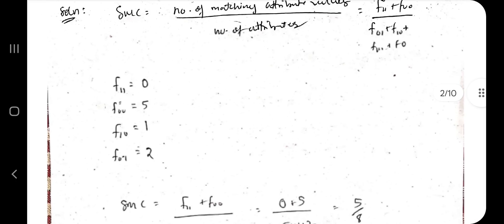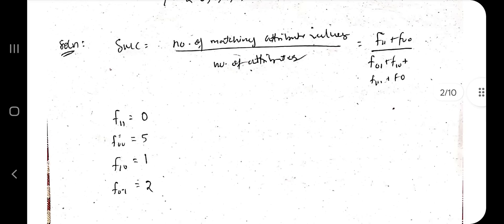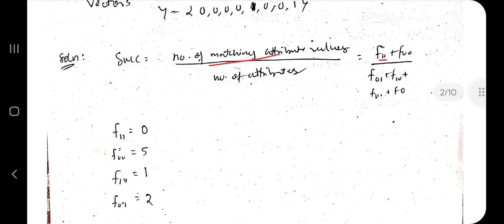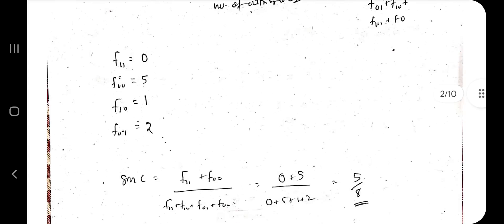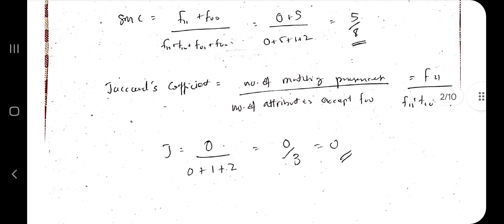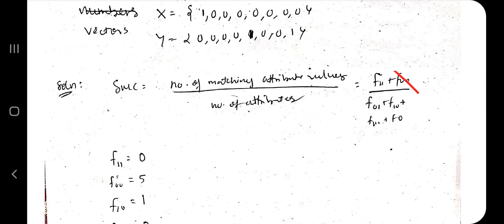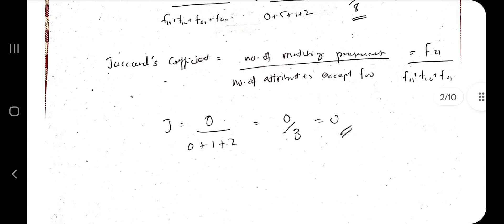Count f11 (how many times 1-1 occurred together), f00 (how many times 0-0 occurred — here it's five), f01, and f10. The formula is: SMC = (f11 + f00) / (f01 + f10 + f11 + f00). For Jaccard coefficient, use the same formula but remove f00 from both numerator and denominator: Jaccard = f11 / (f01 + f10 + f11). Substitute the values and find the answer.